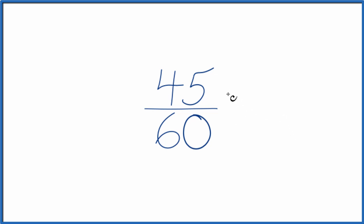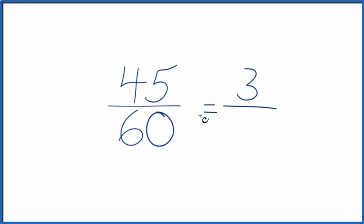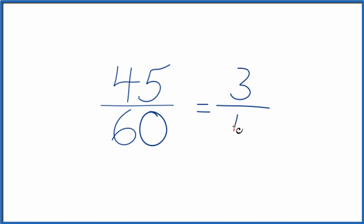So to do that we want to find a common factor, the greatest common factor, something that goes evenly into 45 and 60. Turns out 15 goes into both 45 and 60, because 45 divided by 15 equals 3, and 60 divided by 15 is 4. So we can simplify 45 sixtieths down to 3 fourths.